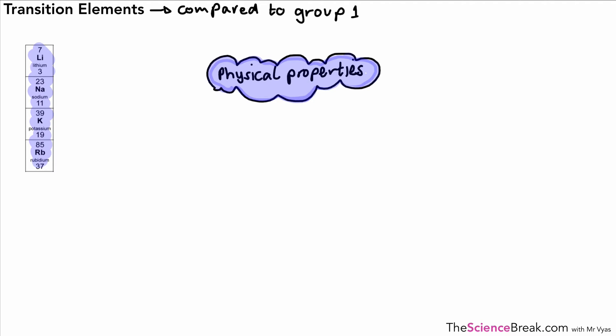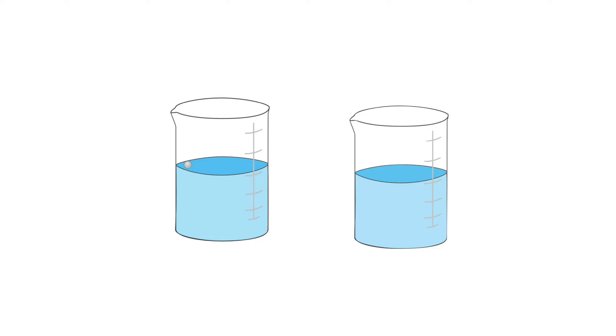First one is that our transition elements compared to Group 1 are much harder and stronger than the metals that we find in Group 1. You'll remember that previously we saw that lithium could quite easily be cut by a knife along with other Group 1 metals. The transition metals are also much more dense or have a higher density than Group 1 metals. If you remember, we looked at lithium, you could see it there floating around on the surface in a ball shape, fizzing away and eventually disappearing as it reacts with the water. If you took something like copper, a transition element, and dropped it in the water, you would notice that it would sink and actually wouldn't react with the water at all.